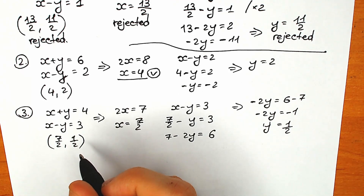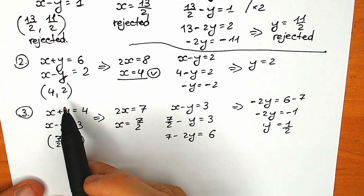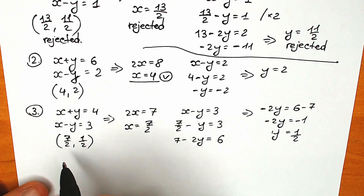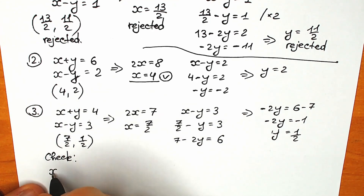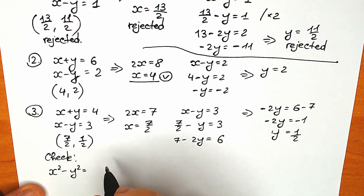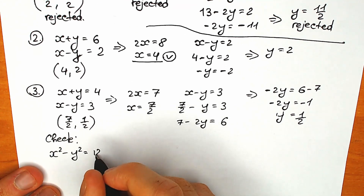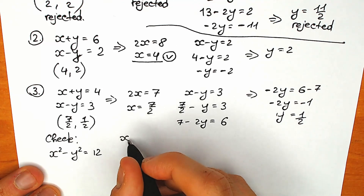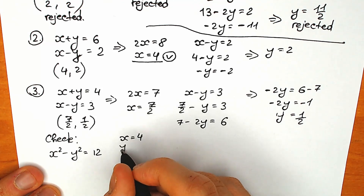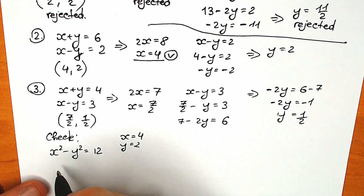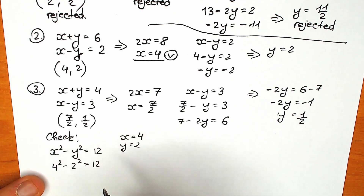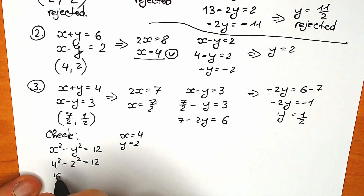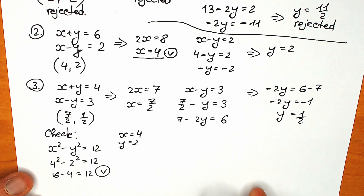Let's check our natural root. We had x squared minus y squared equal to 12, with x equals 4 and y equals 2. So 4 squared minus 2 squared equals 16 minus 4 equals 12. Our root is absolutely correct.